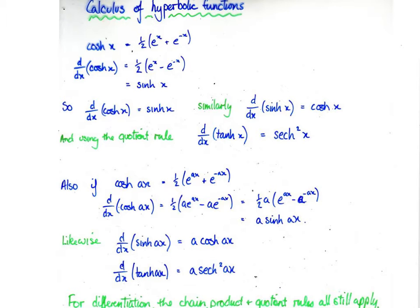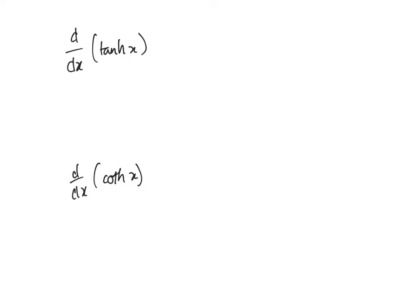For differentiation, we can use all the same sort of rules as we did for differentiation of trig functions — we can use the product rule, the quotient rule, and the chain rule. So let's look at how to differentiate tanh ax. Really, if we rewrite this, this is the differential of a quotient: sinh ax over cosh ax.